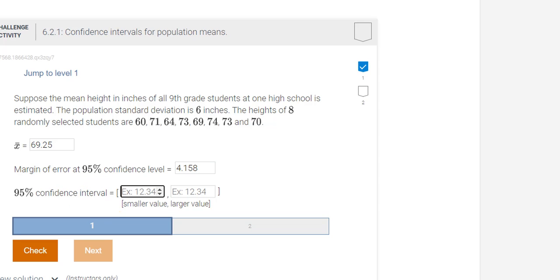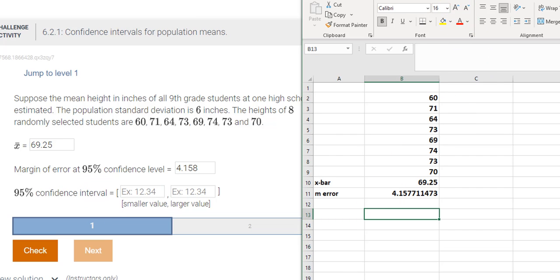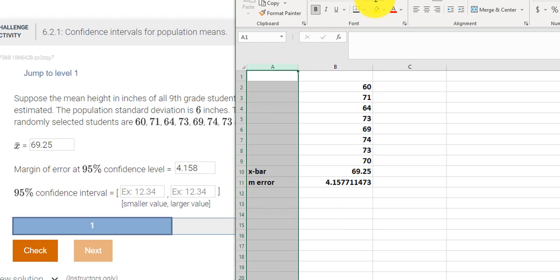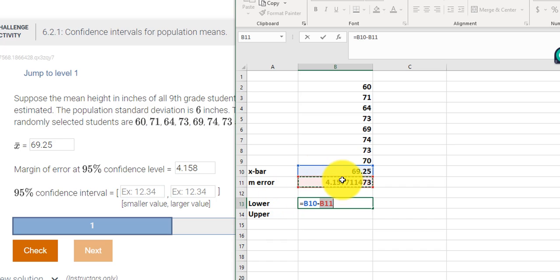Now to get the lower and upper levels for my confidence interval, I need the upper bound and the lower bound. We're going to have the lower bound and an upper bound. To do that, it's X bar plus the margin of error and the X bar minus the margin of error. To get the lower, I'm going to say equals, here's my X bar minus my margin of error. To get the upper limit, equals X bar plus the margin of error.